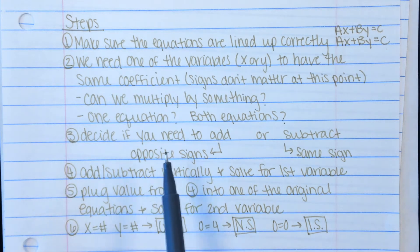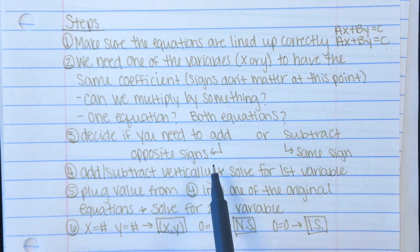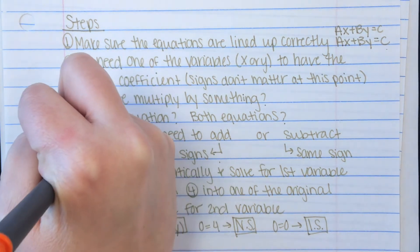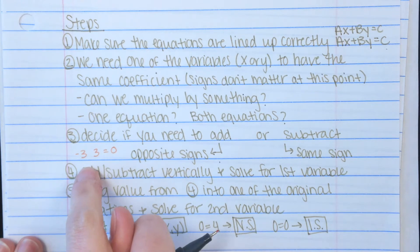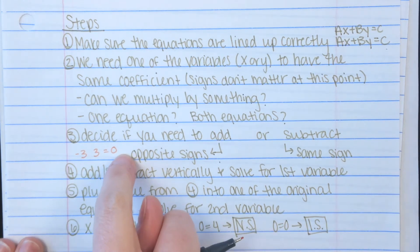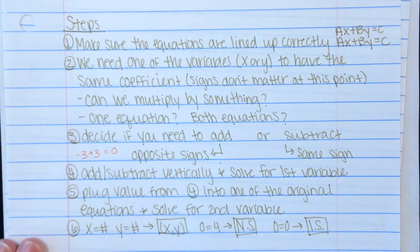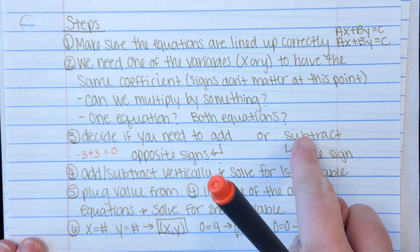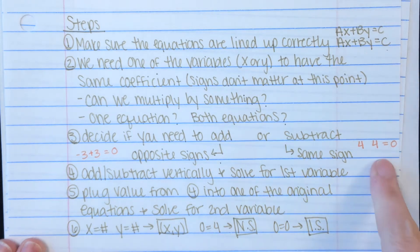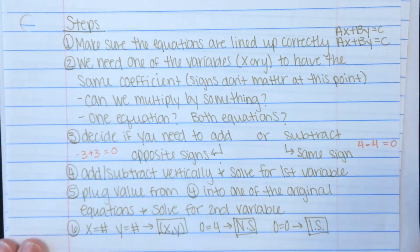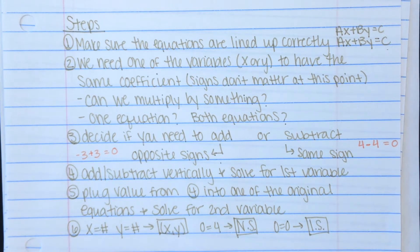Step three: decide if you need to add or subtract. Look at those variables with matching coefficients. If they have opposite signs, you're going to add — a negative three and a positive three add to zero. If they have the same sign, say positive four and positive four, you subtract to get them to equal zero. So opposite signs means addition; same signs means subtraction.